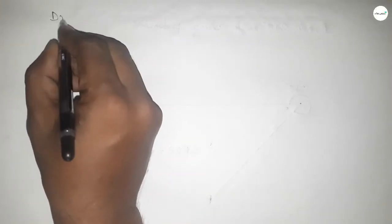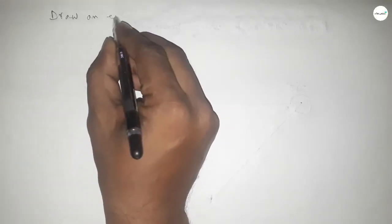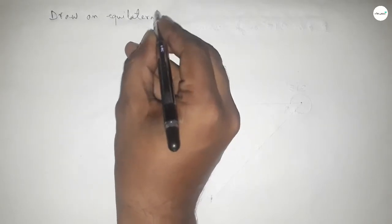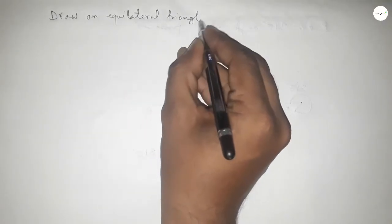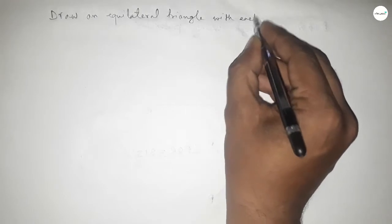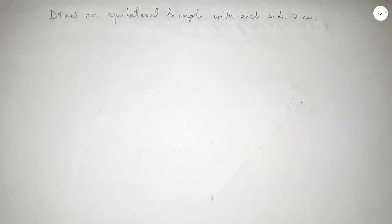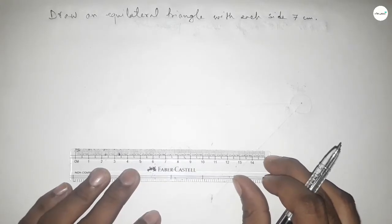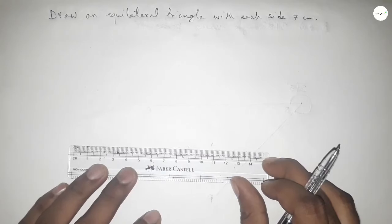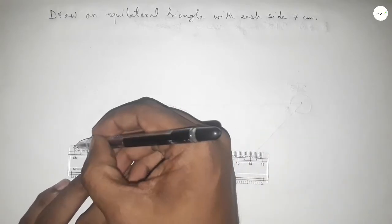Hi everyone, welcome to SSR classes. Today in this video we have to draw an equilateral triangle with each side 7 centimeters. So let's start the video. First of all, drawing a line of length 7 centimeters.